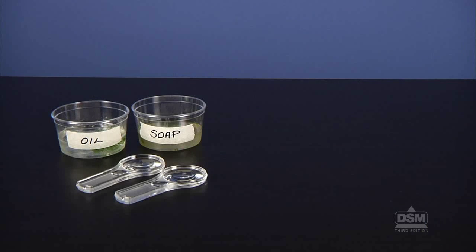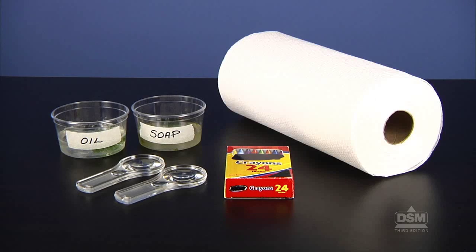To prepare for session two, each student will need his or her copy of Activity Sheet 11. Each team of four will need their dishes of polluted water, two magnifiers, some crayons, and some paper towels.